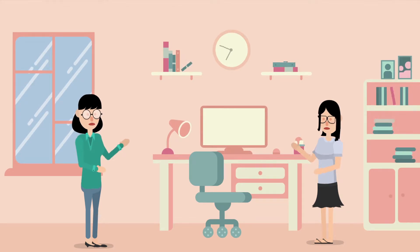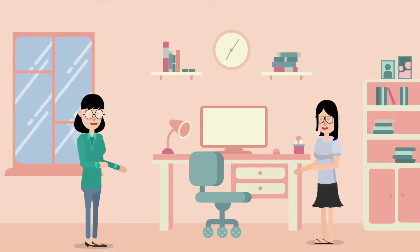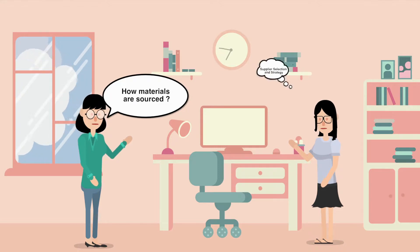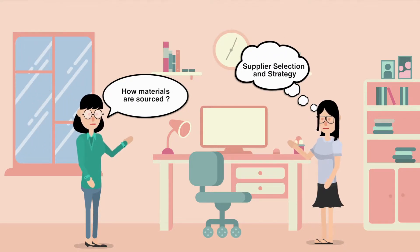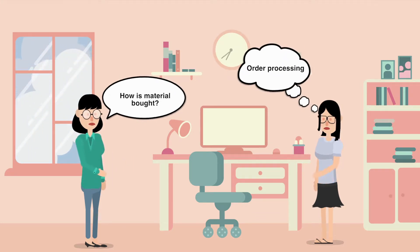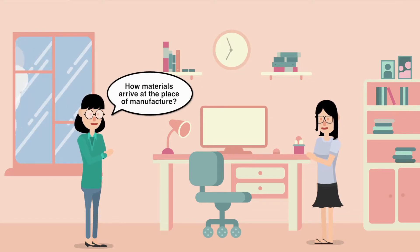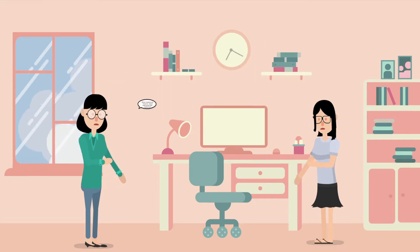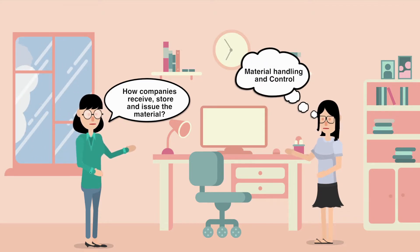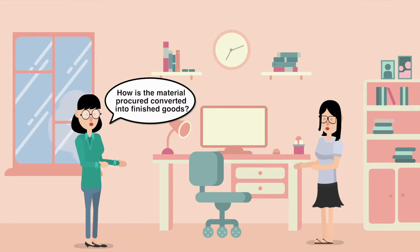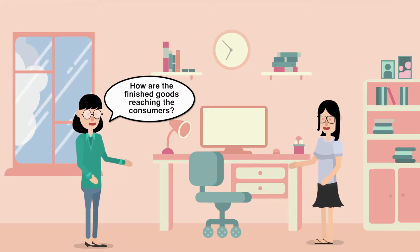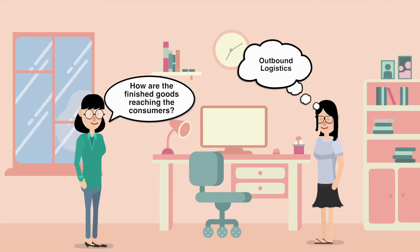When we talk about supply chain and procurement, we can identify key activities: what materials are sourced, make-or-buy decisions, how materials are sourced, supplier selection and strategy, how materials are bought, order processing, how materials arrive at the place of manufacturing through inbound logistics, and how companies receive, store, and issue materials through material handling and control.